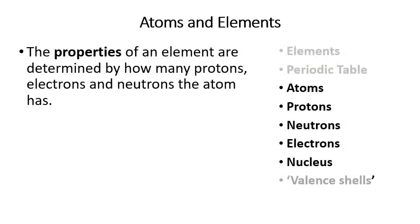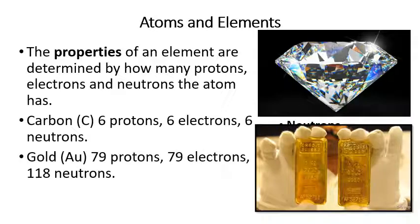The properties of an element are determined by how many protons, electrons, and neutrons the atom has. A carbon atom contains six protons, six electrons, and six neutrons — and that composition gives carbon its properties. Gold is composed of 79 protons, 79 electrons, and 118 neutrons, and that is what gives gold its properties: being a metal that conducts electricity, is solid at room temperature, and melts into a liquid when heated.